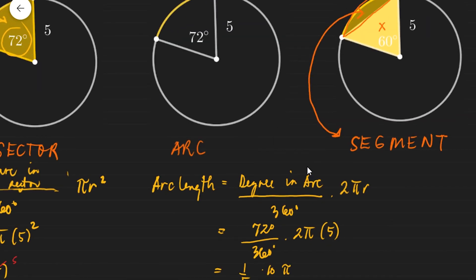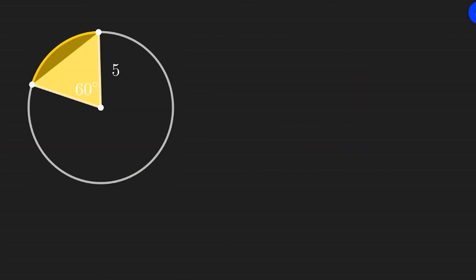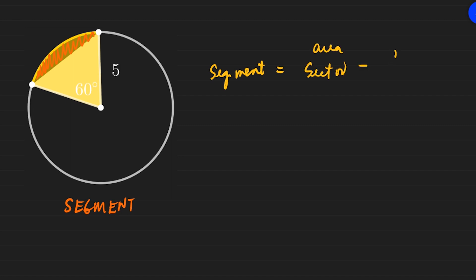Therefore, the length of this arc is 2 pi units. Now let's talk about the segment. The segment is just this part here — it's equivalent to the area of the sector minus the area of the triangle formed by the radius and the chord connecting the endpoints of the arc.